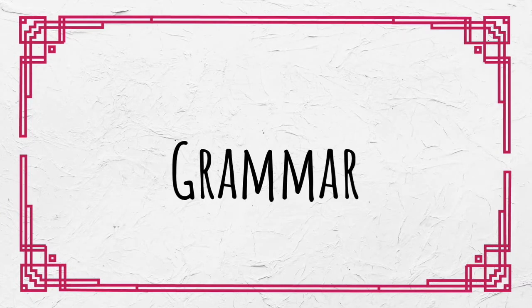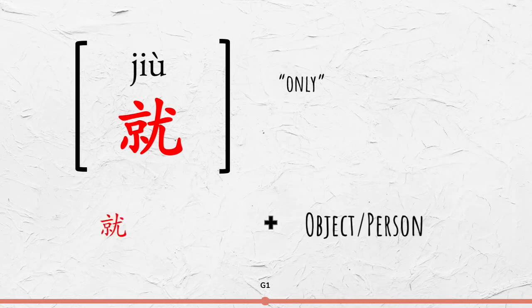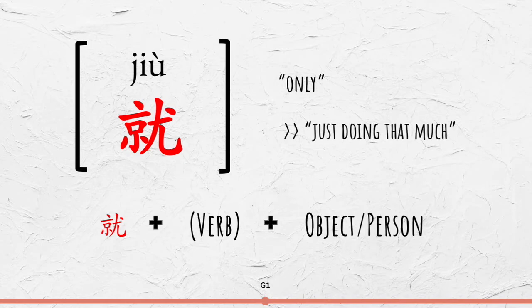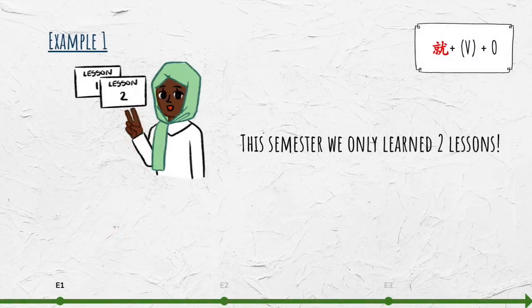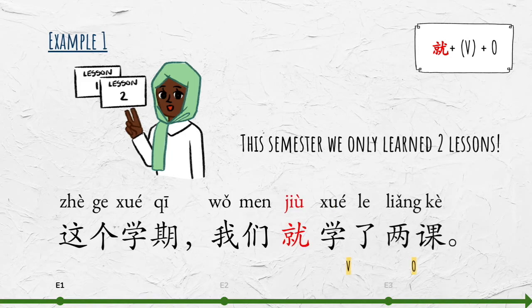Now let's move on to the grammar. 就 is used to emphasize the meaning of only. It is placed before an object or person that you want to emphasize. If the sentence contains a verb, 就 usually goes before the verb to express the idea of just doing that much. For example, this semester we only learned two lessons. 这个学期我们就学了两课。